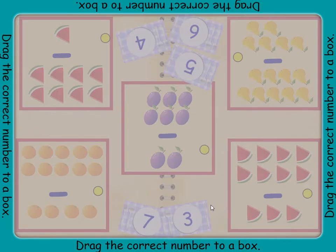Look at one of the boxes. How many pieces of fruit are in the group at the top of the box? How many pieces of fruit are taken away? How many pieces would that leave? Drag to the box the number of pieces of fruit that are left.